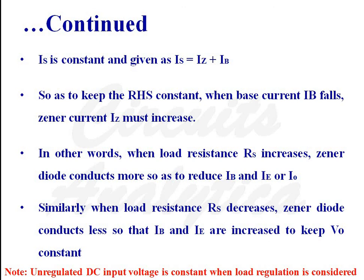Similarly, when load resistance RL decreases, the zener diode conducts less so that base current IB and emitter current IE are increased to keep output voltage V0 constant.